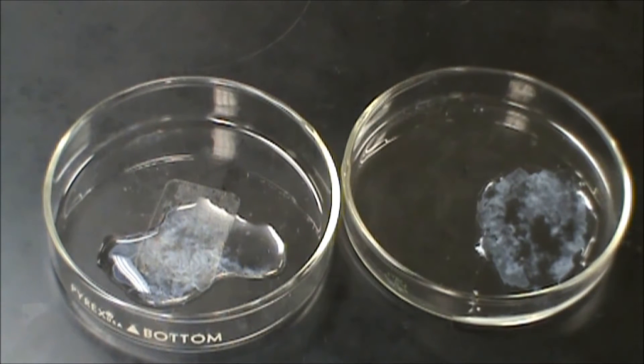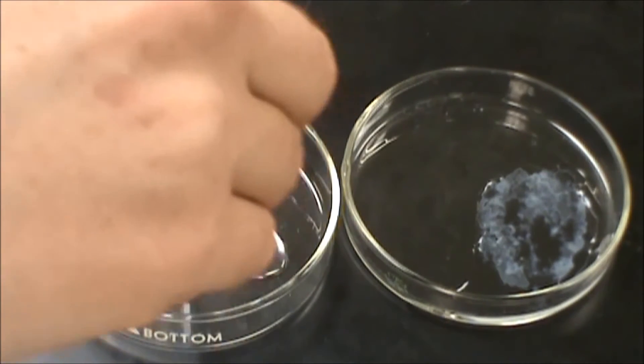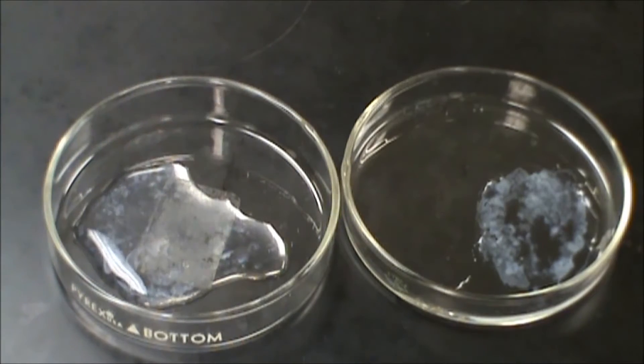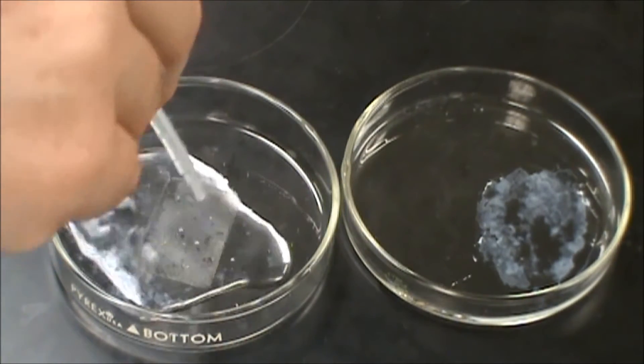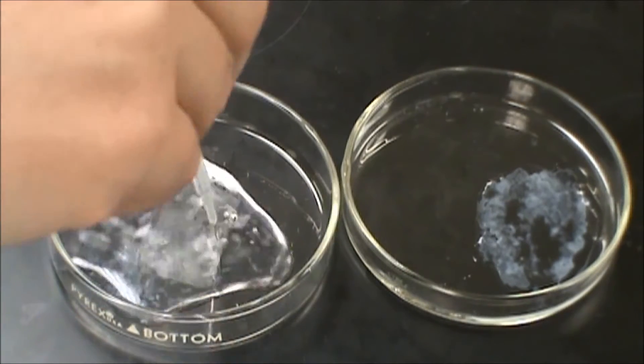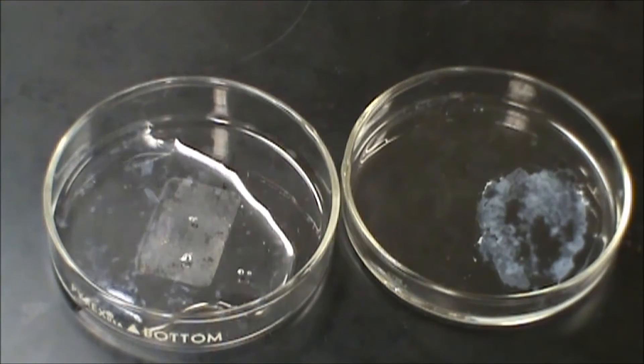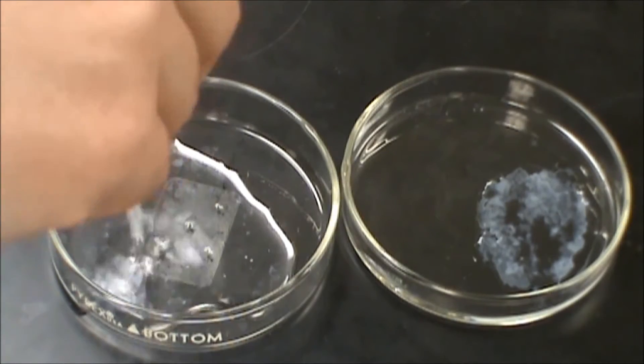Now the zinc hydroxide is what is amphoteric. So what I'm going to do here is take one of these and continue to add a lot of hydroxide to it. So I'm adding a base to it and the zinc hydroxide is going to react with that base to form something.